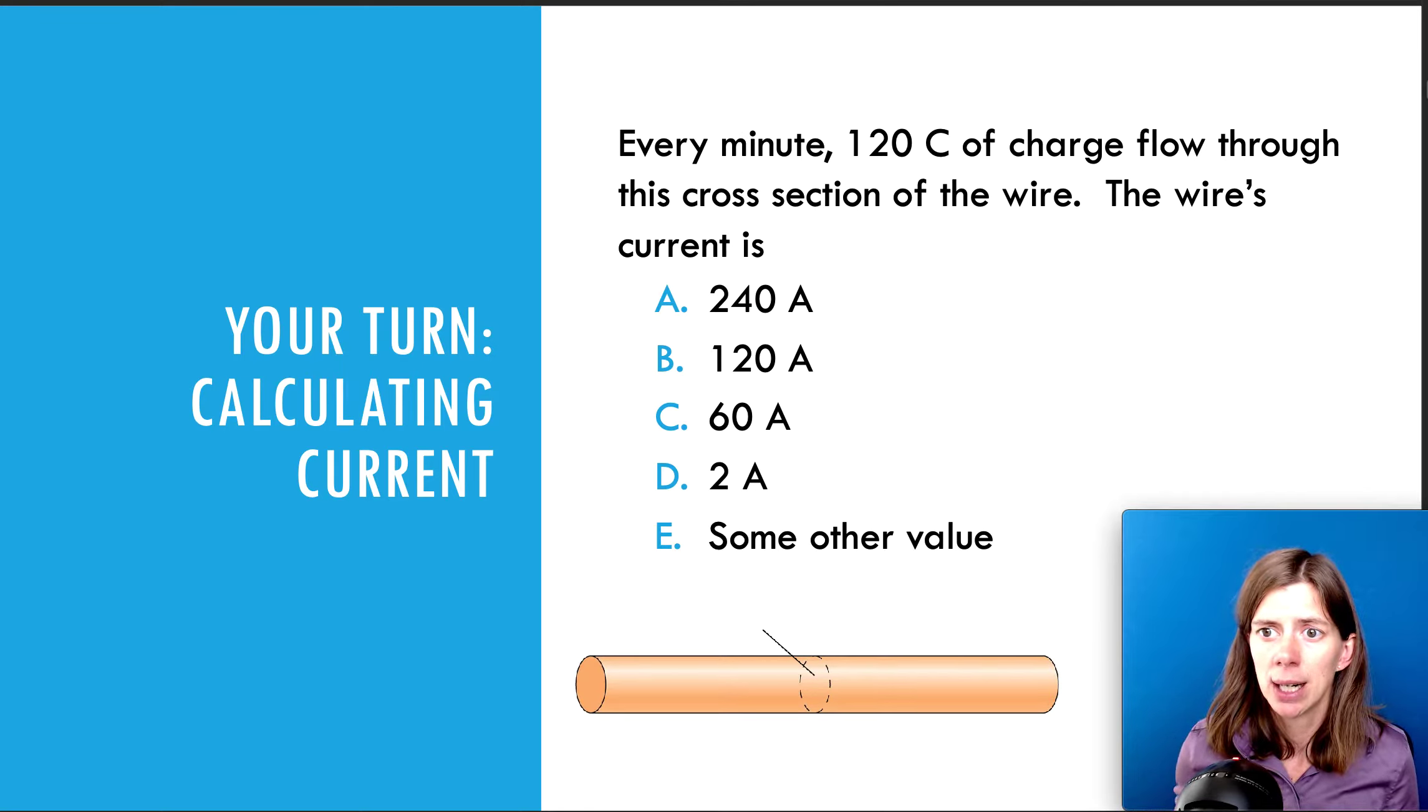Let's look at this question here. Every minute, 120 coulombs of charge flow through this cross-section of the wire. What is the current in the wire? So, pause the video. Think about it for a second. Let's take a look.